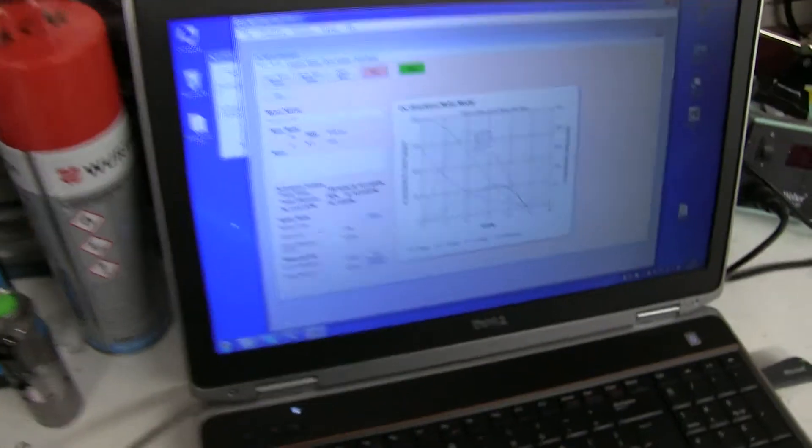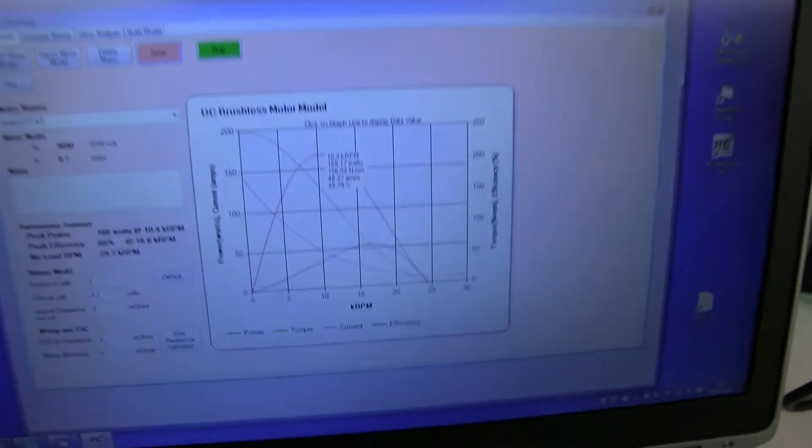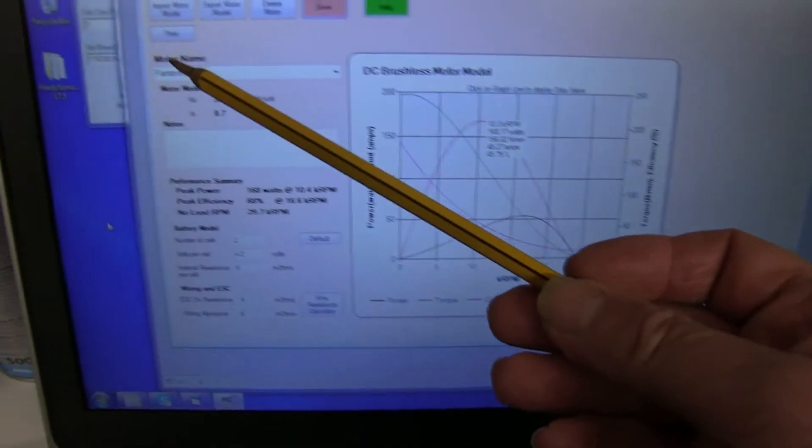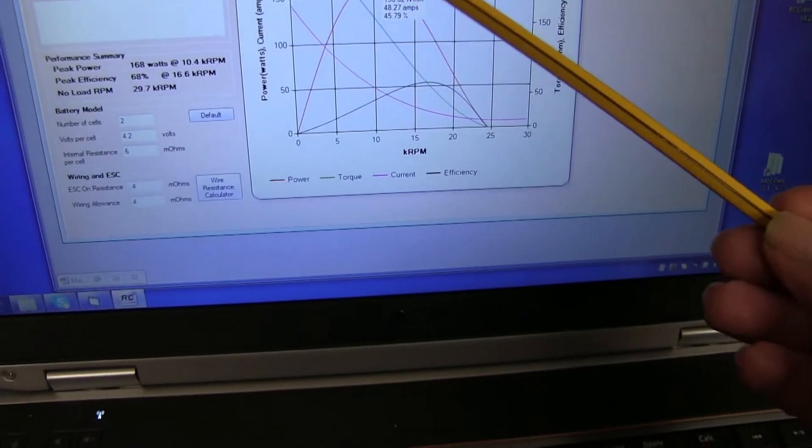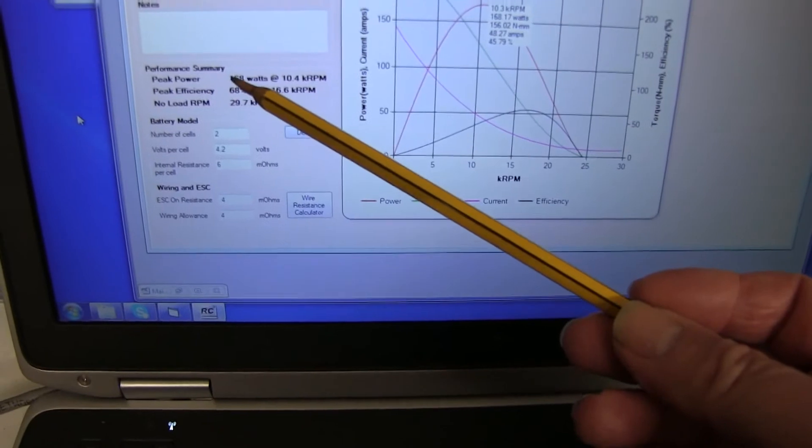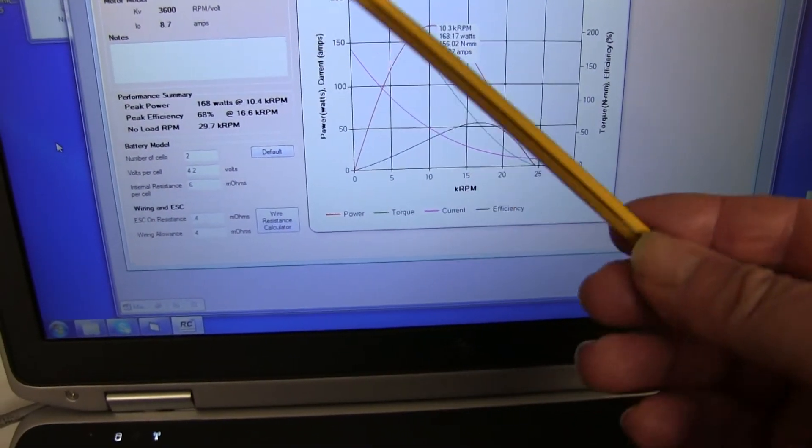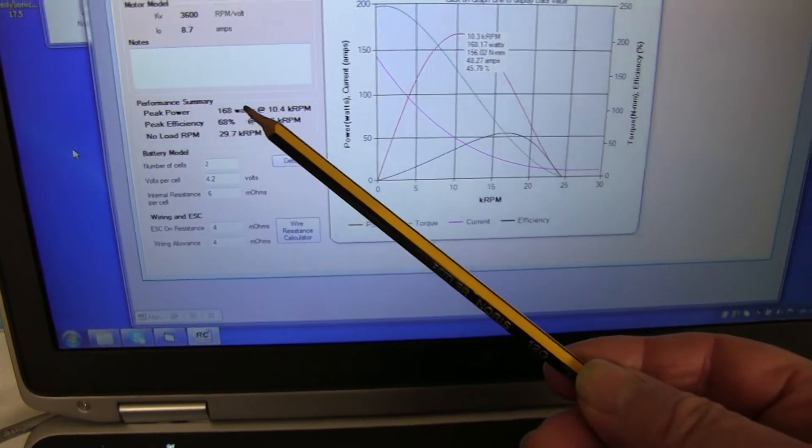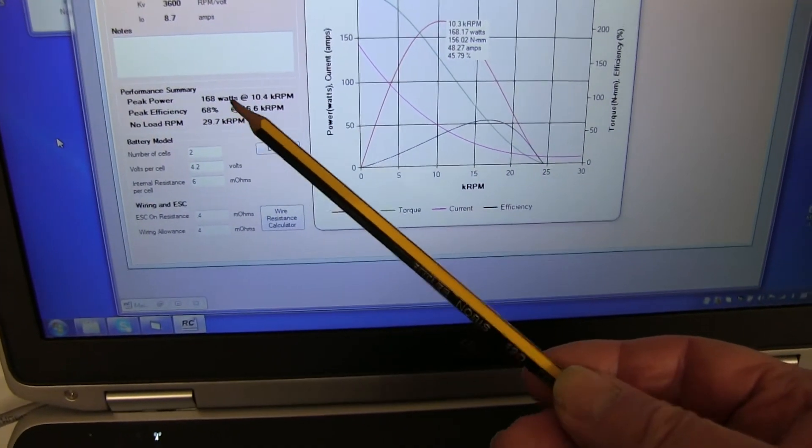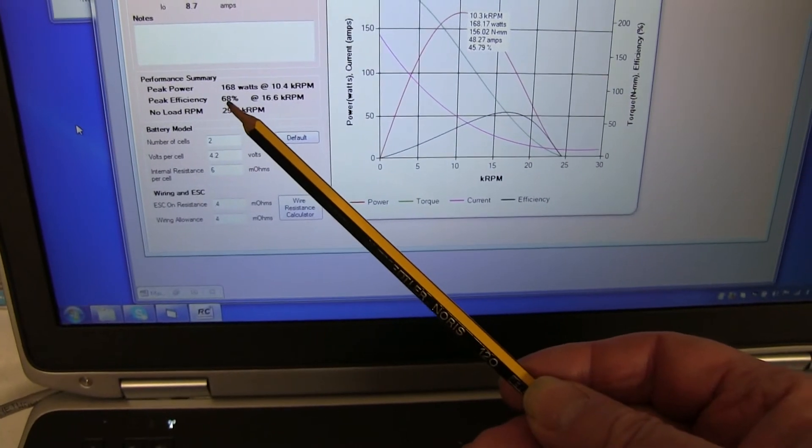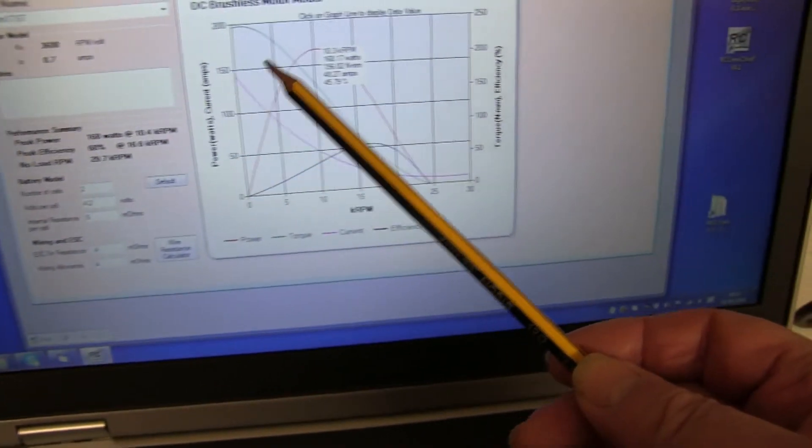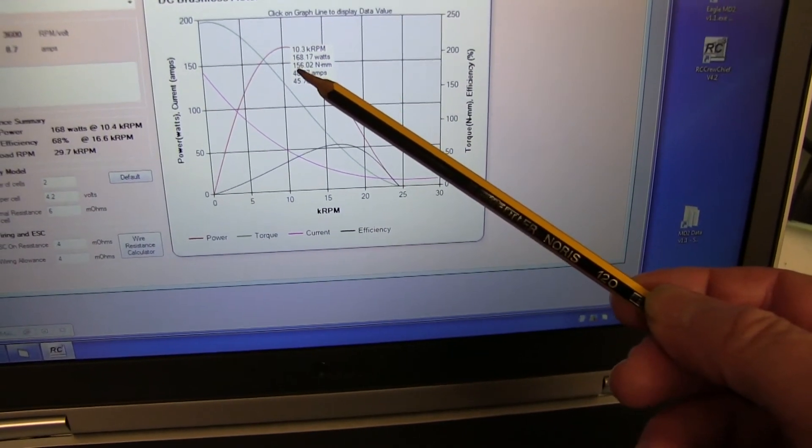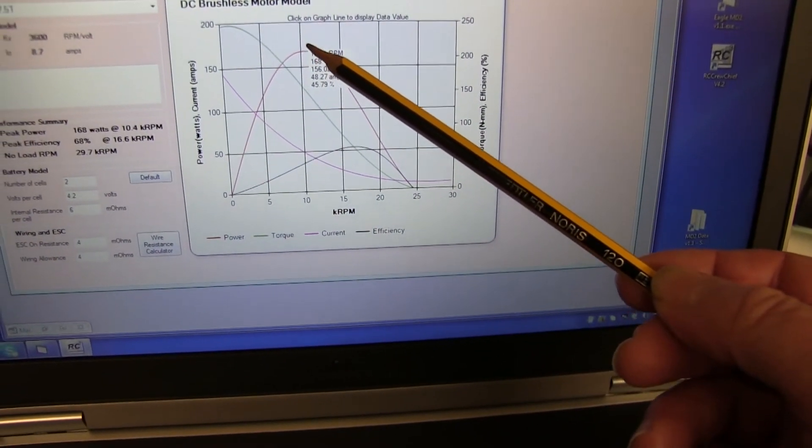On the computer we've got, here the Phantom 17.5 I've just done. You've got a few variables you have to adjust. But it's close enough, 168 watts. Maximum efficiency 68%, and the torque 156 at maximum power.